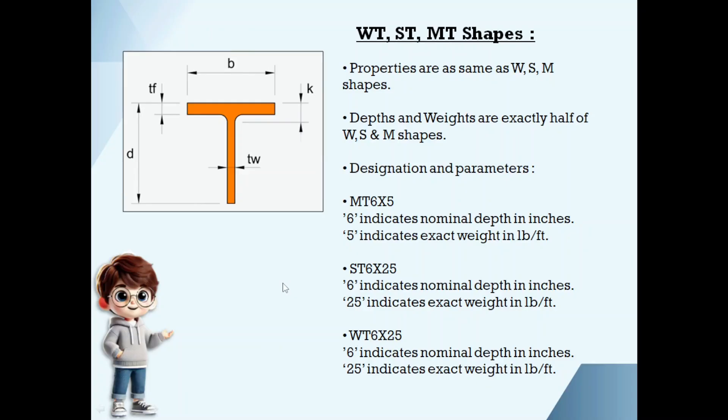WT, ST and MT shapes. These properties are same as W, S and M shapes. Depths and weights are exactly half of the W, M and S shapes. Designations are also same. MT 6 by 5 if you take, 6 is the nominal depth, 5 is the unit weight. The same way for ST and WT also.